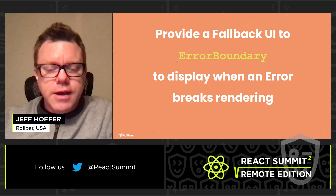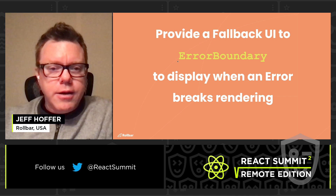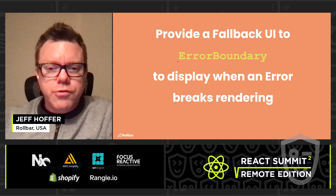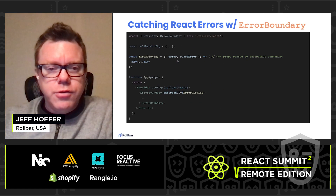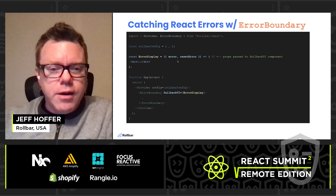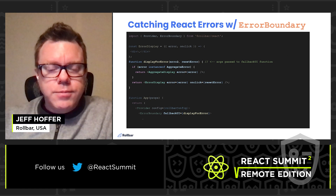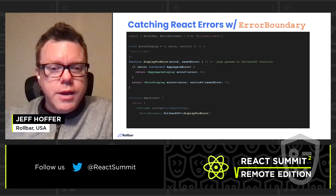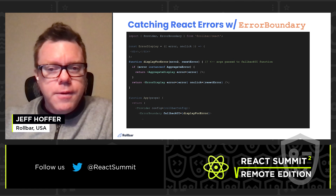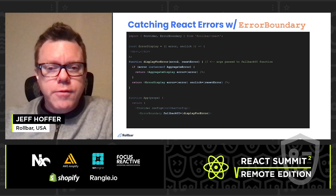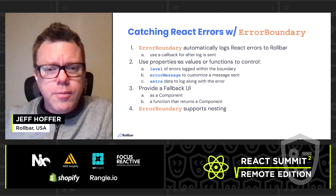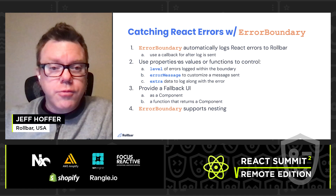Finally, the error boundary makes it easy to have a fallback UI displayed when a React error occurs. This allows a nice display to your users when the UI would otherwise be broken and unusable. Simply pass a component to the fallback UI prop of the error boundary and it will receive the error and a reset error function that can clear the error boundary's error condition. Fallback UI also accepts a function that it will call with error and reset error args, expecting a return of a component for display. The new error boundary with its customization properties makes it super easy to automatically log React errors to Rollbar.